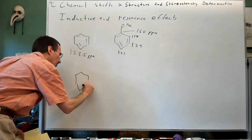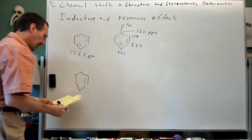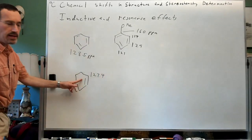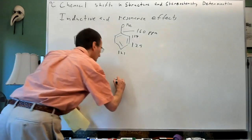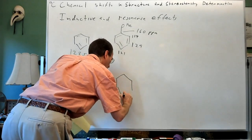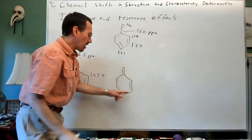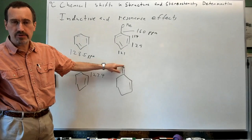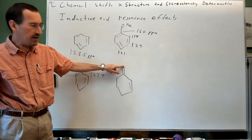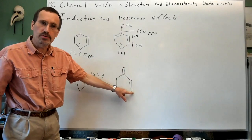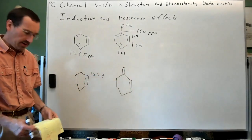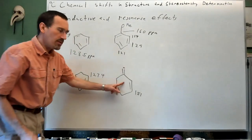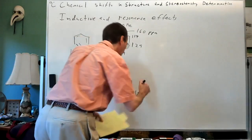The same type of thing applies to alkenes. Electron-withdrawing substituents on alkenes produce a similar effect. Cyclohexene is at 127.5 ppm. If you go to cyclohexenone, that beta carbon — where the double bond is pushing electron density into the carbonyl — shows the carbonyl stretching frequency weaker in IR, the beta protons downfield in proton NMR, and in the carbon NMR we see 151 ppm. But the alpha carbon isn't heavily affected; it's at about 129 ppm.